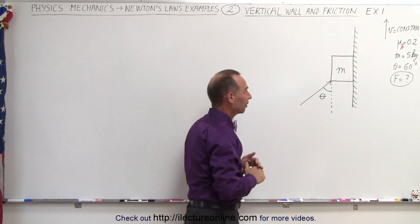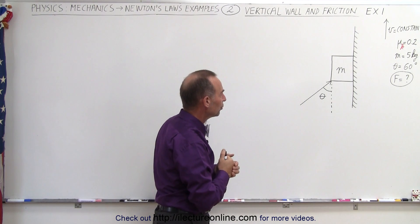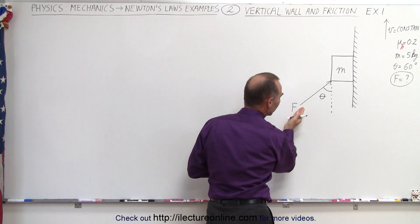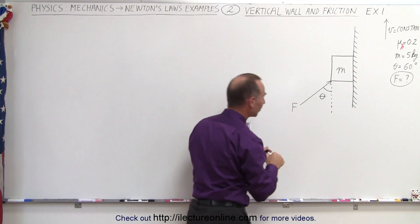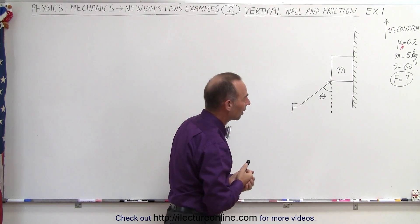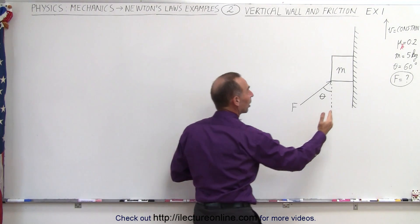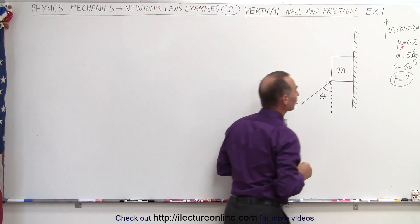there is friction between the block and the wall. Its coefficient of kinetic friction is 0.2. And here we have a force pushing the block towards the wall, but notice it's at an angle where theta is equal to 60 degrees. Assuming the mass of the block is 5 kilograms,